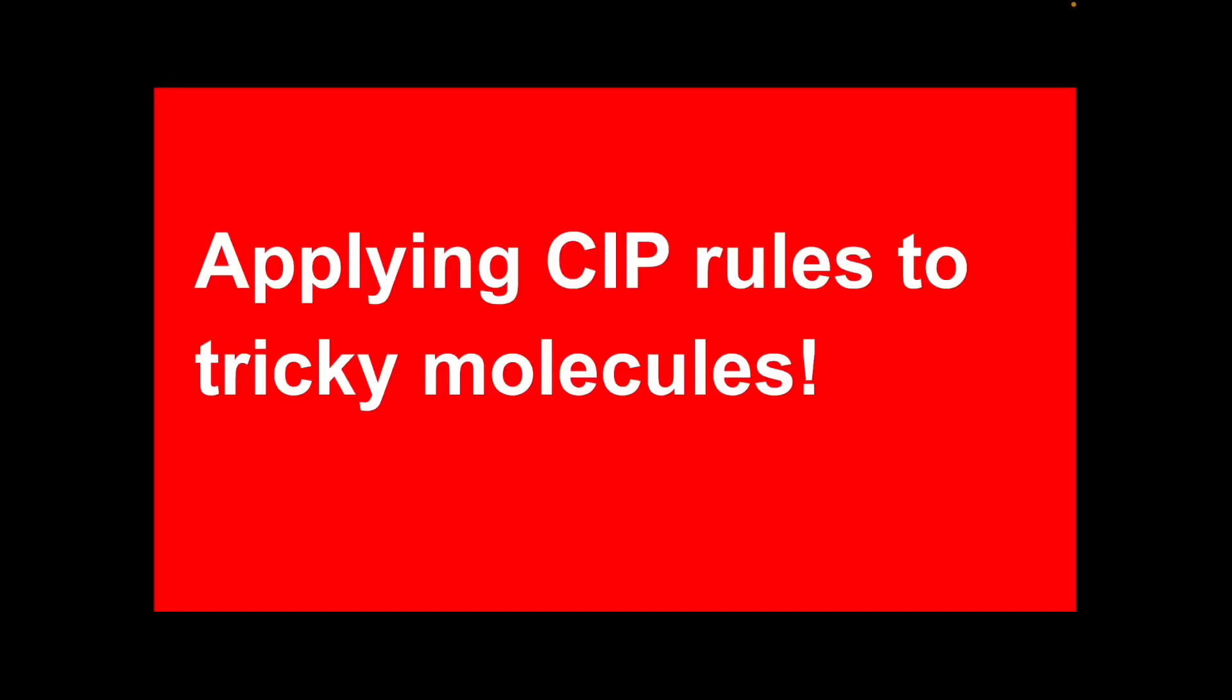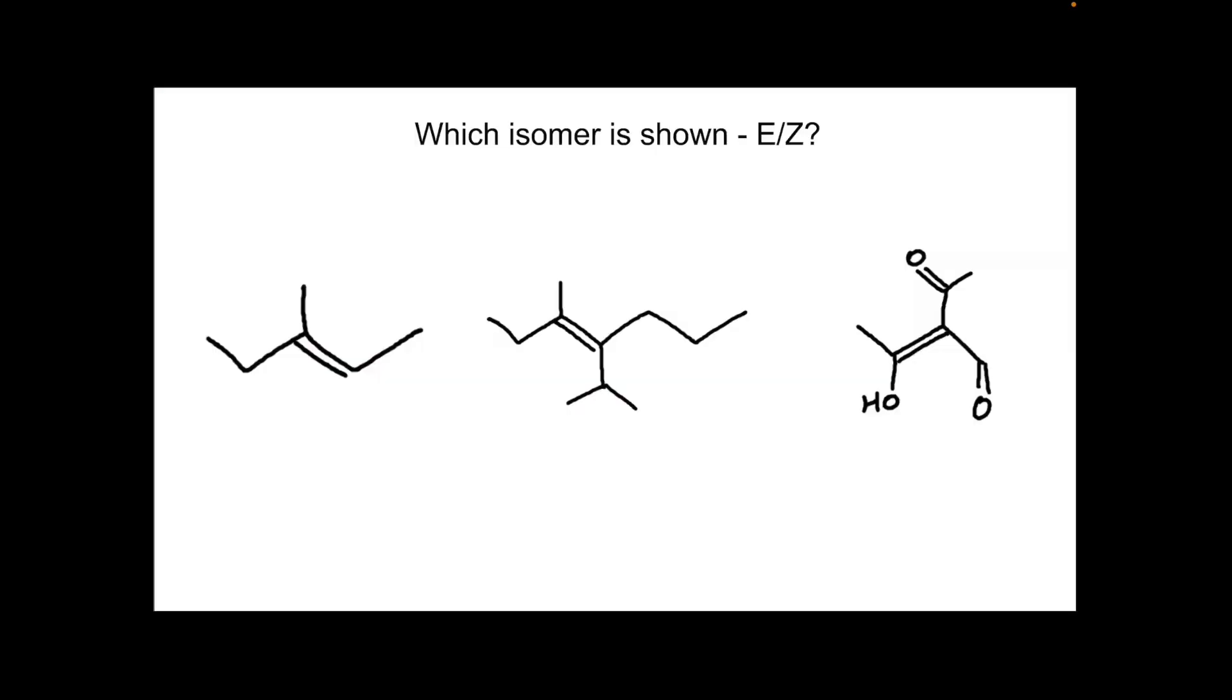I've just started the alkenes topic with my year 12 students, so I thought I'd make a new video to look at how you apply the CIP rules to some tricky alkene molecules. For the purpose of the video, I'll use these three molecules here. So basically, I'm just going to run through and explain which isomer is shown, E or Z.